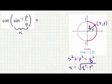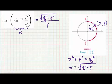We can now simplify our composition. The cotangent of alpha is going to be x divided by y. In other words, the square root of q squared minus p squared divided by p.